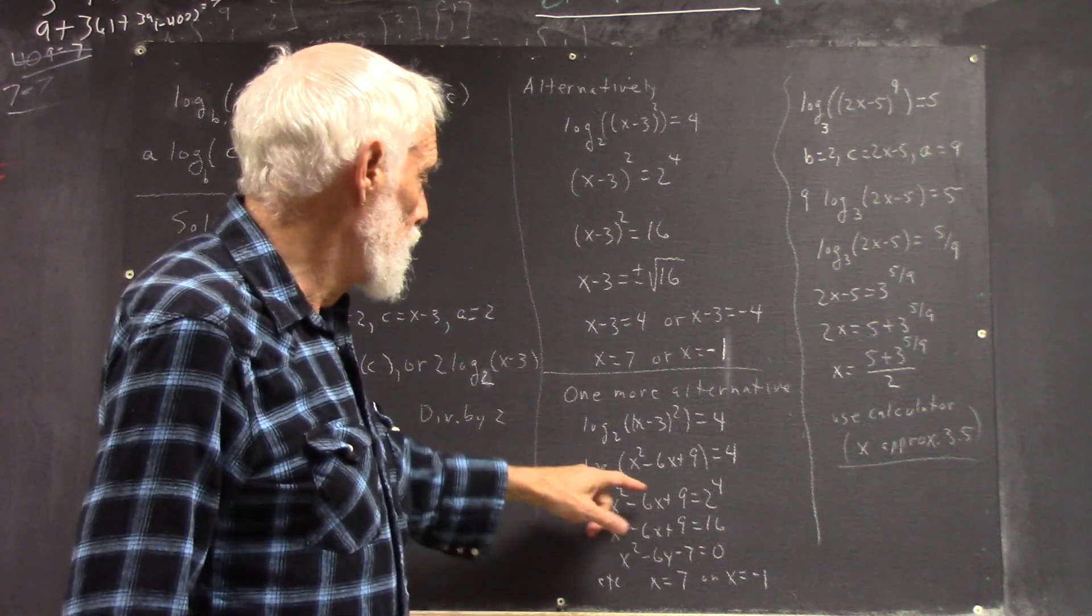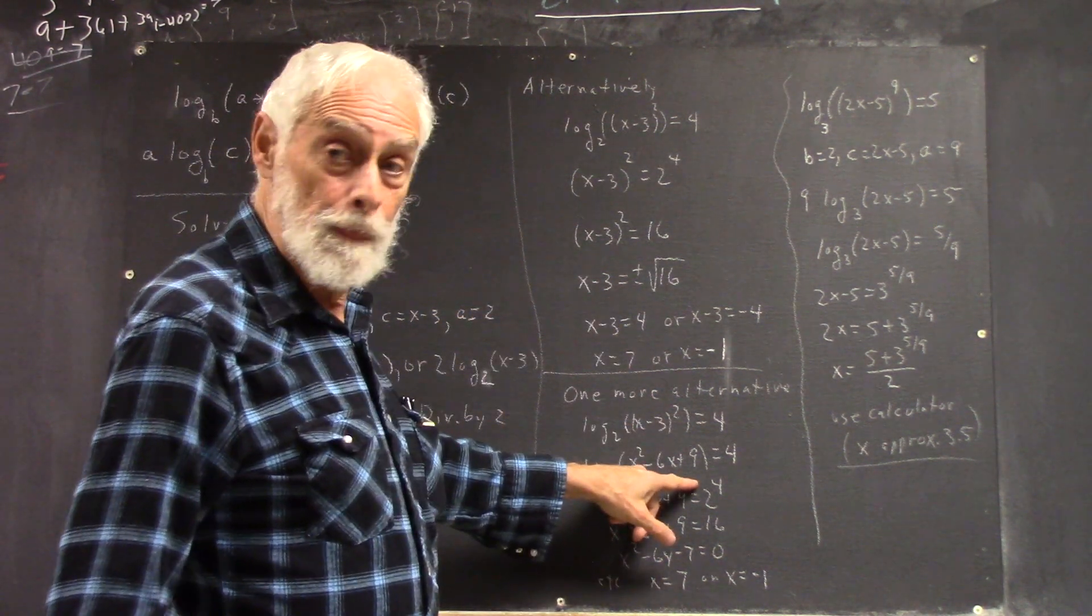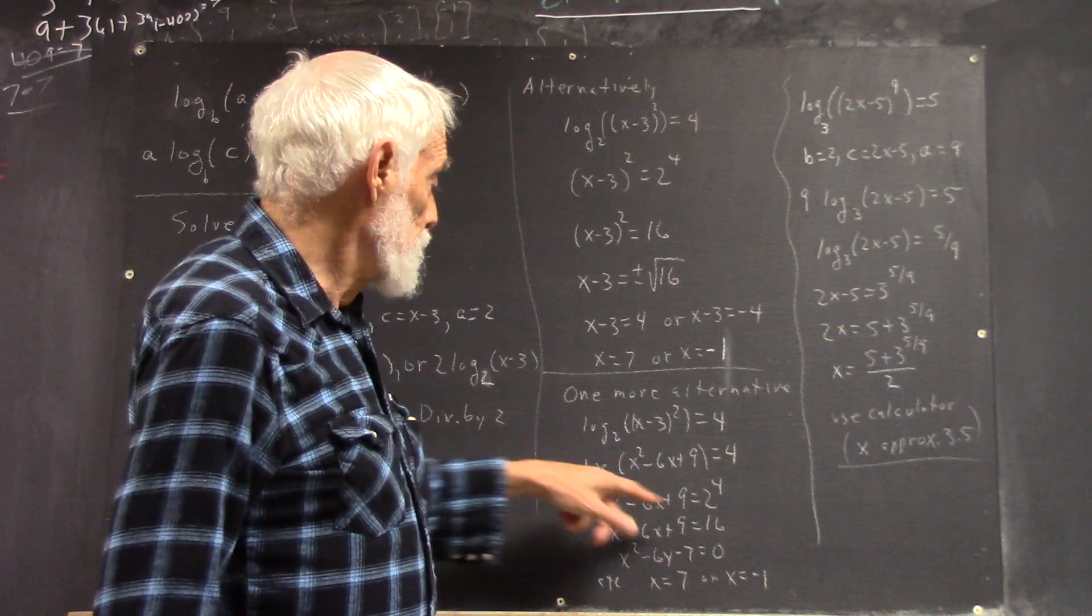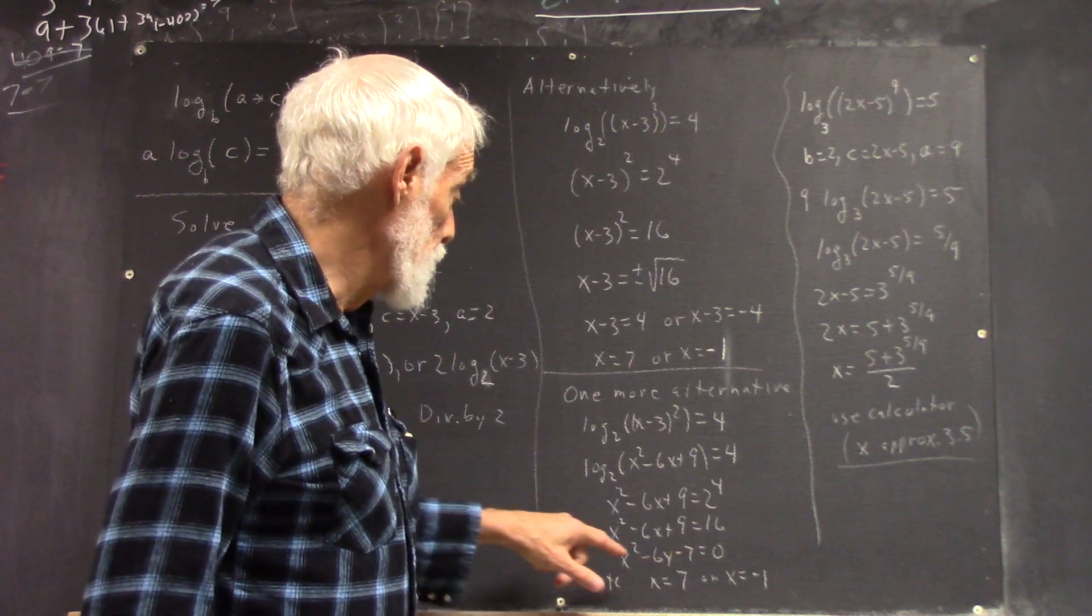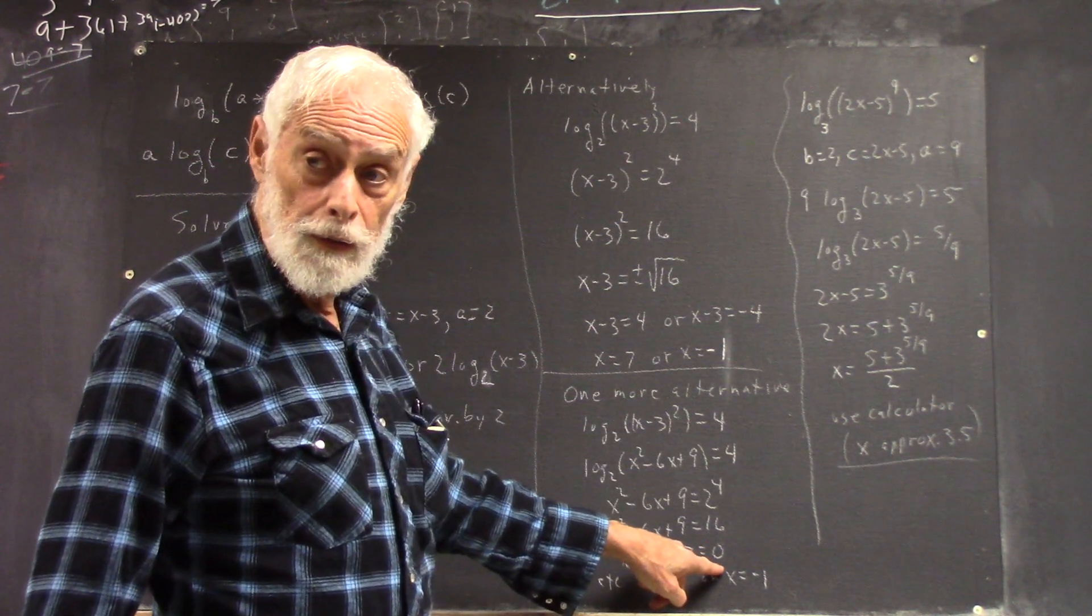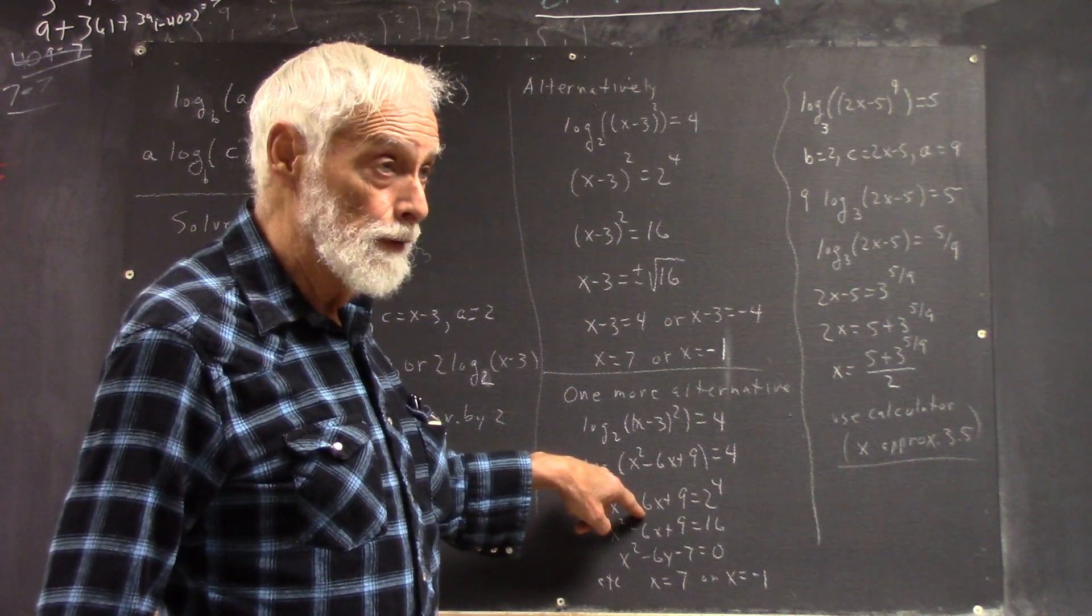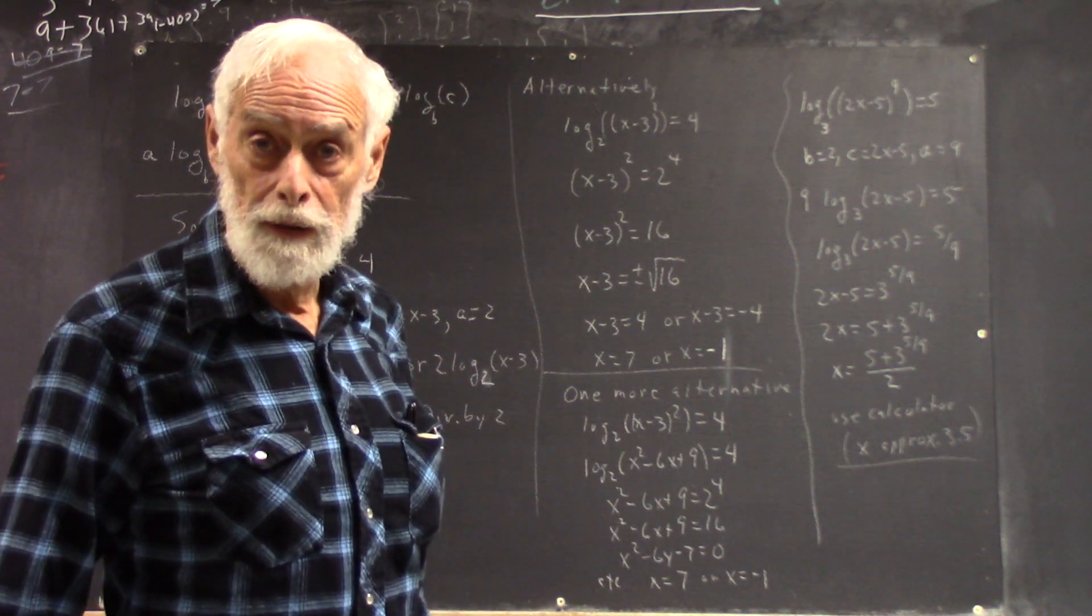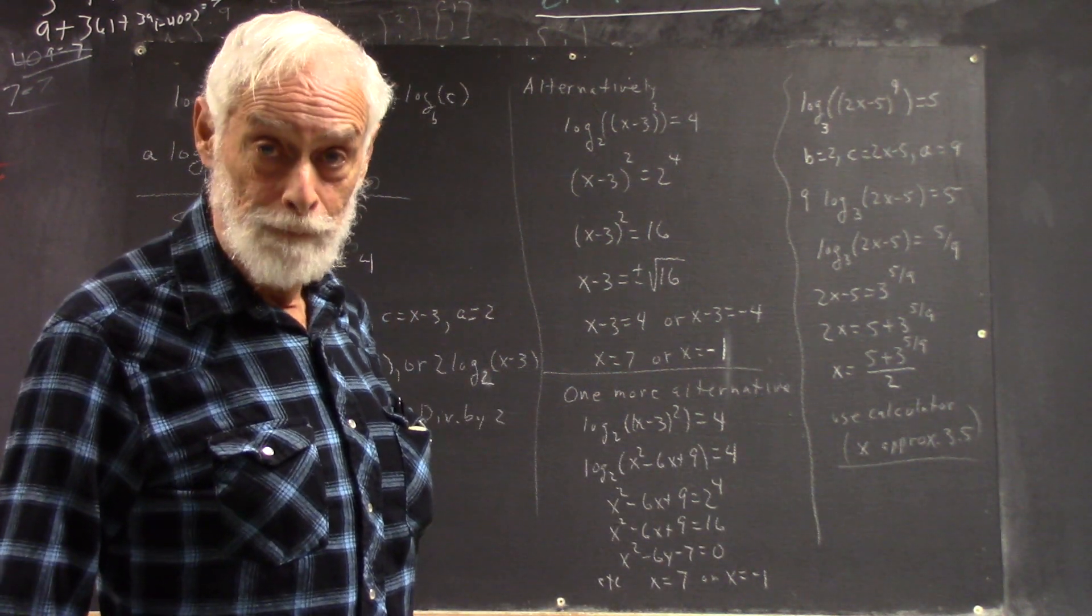And we could also have expanded the square and then done what we usually do. This equals 2 to the fourth. That gives you this, which simplifies to this standard quadratic form. Easy to factor. Easy to use the quadratic formula. And you get X equals 7, X equals negative 1 as solutions again.